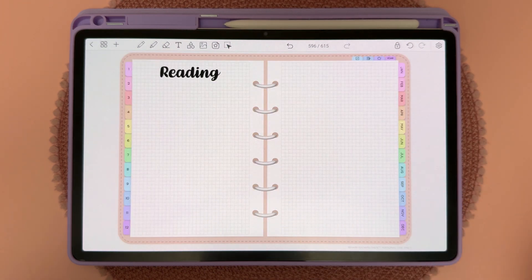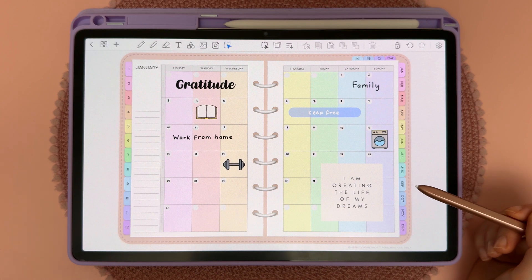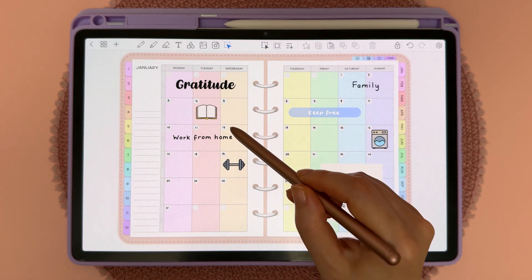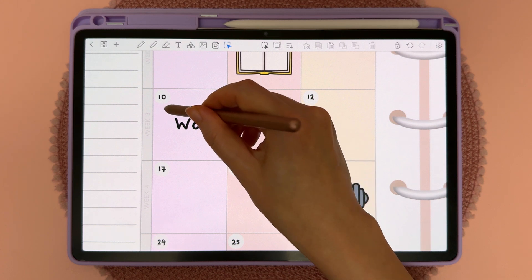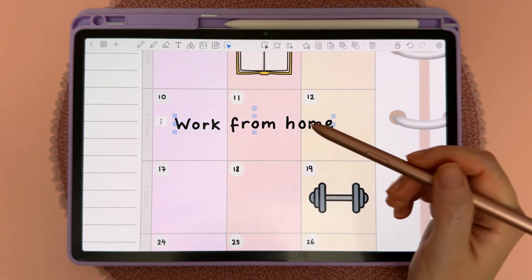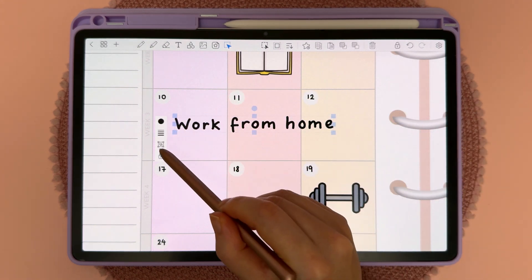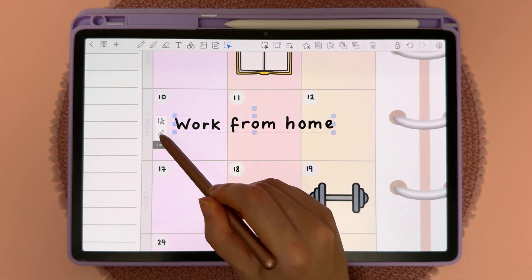You can create hyperlinks out of any object, so text, images, handwriting, and shapes. You can also group together a selection of objects, tap on the three dots, and then group it before applying the hyperlink.